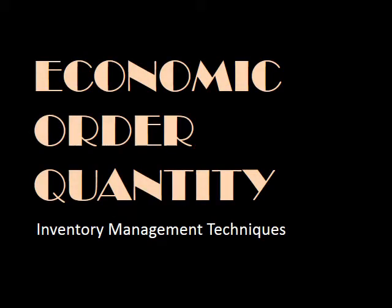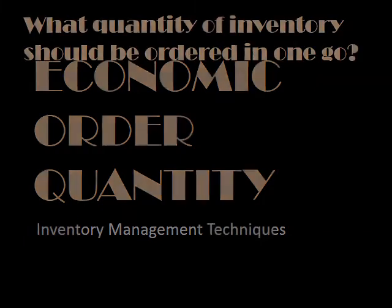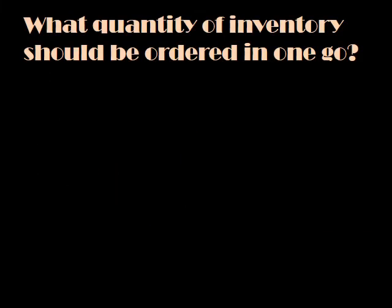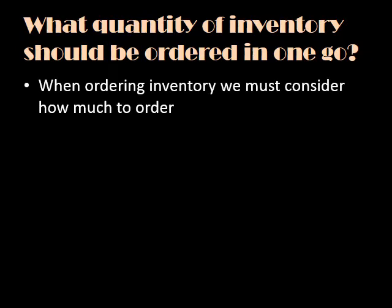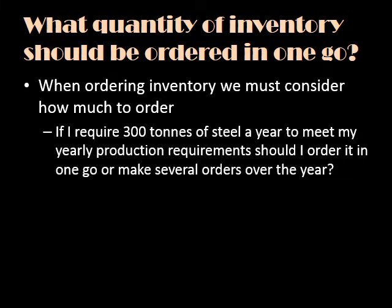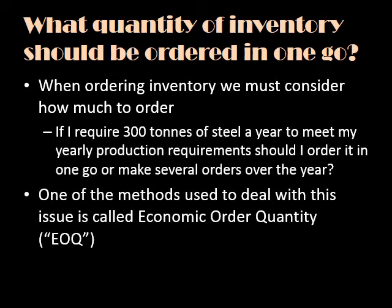In this session we shall be looking at a technique called economic order quantity. When we put in an order to a supplier for a particular type of inventory, we've got to consider what amount of inventory we need to order. For instance, if I required 300 tonnes of steel a year to meet my yearly production requirements, should I order it all in one go or should I make several orders over the year? In general there are advantages and disadvantages associated with both types of approach. One of the methods used to deal with this problem is called economic order quantity, or EOQ.